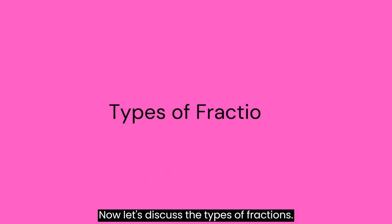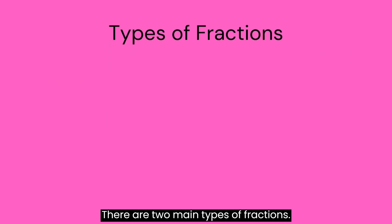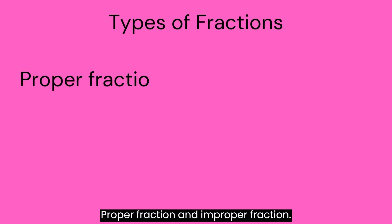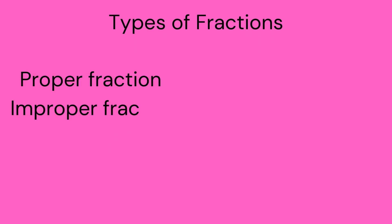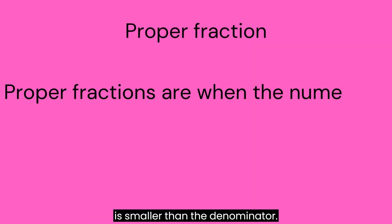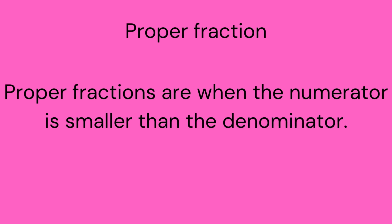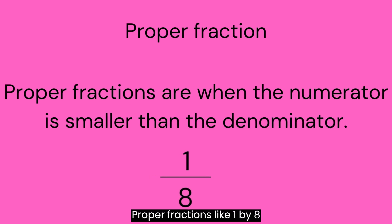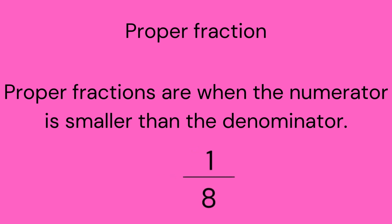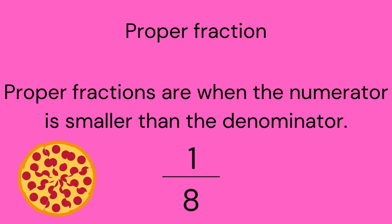Now let's discuss the types of fractions. There are two main types: proper fractions and improper fractions. Proper fractions are when the numerator is smaller than the denominator. Proper fractions, like one by eight, have a smaller numerator than the denominator. Think of it as having one out of eight slices of a pizza.